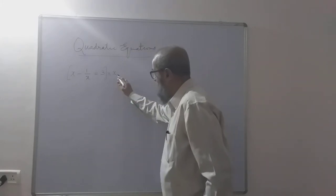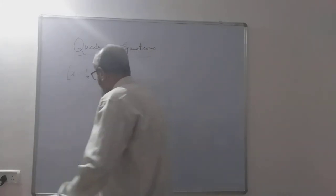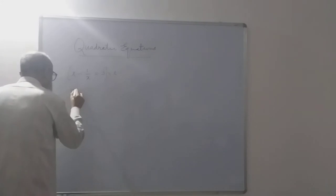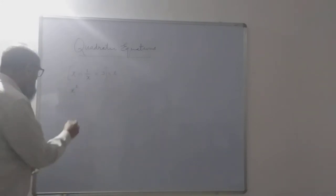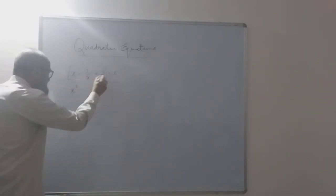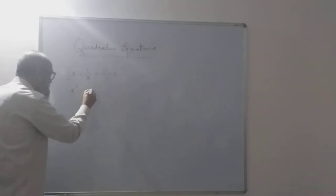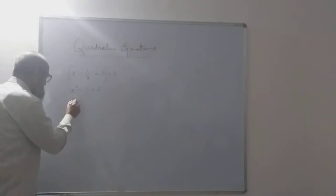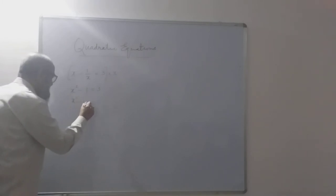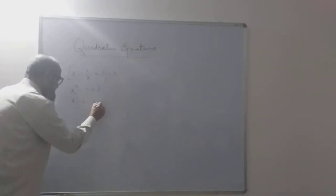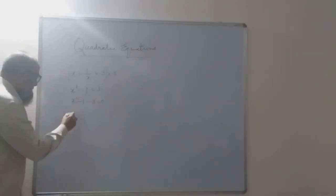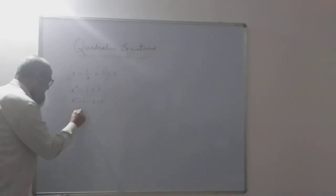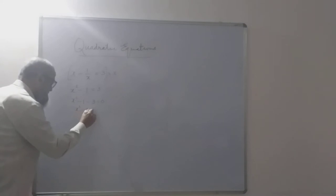If you multiply by x, it becomes x into x, which is x squared, minus 1 by x into x - the x's will get cancelled - is equal to 3. So x squared minus 1 minus 3 is equal to 0, giving us x squared minus 4 is equal to 0.